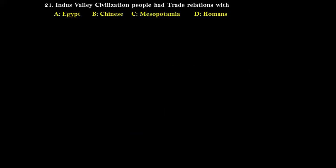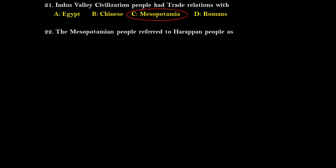Question twenty-one: The Indus Valley Civilization people had a trade relationship with Egyptian, Chinese, Mesopotamian, or Roman civilization? The answer is Mesopotamian. The Mesopotamian people referred to the Indus/Harappan people as 'Meluha' — that is option D.